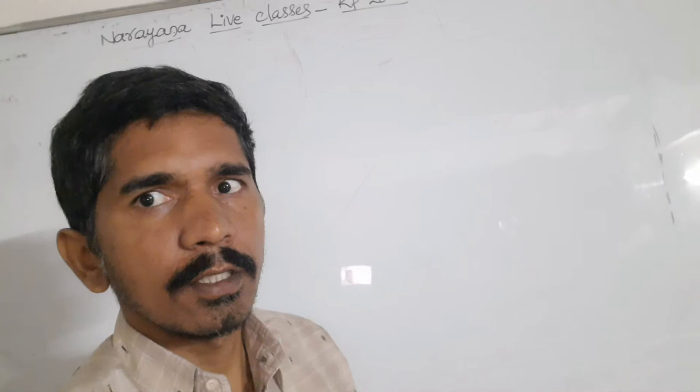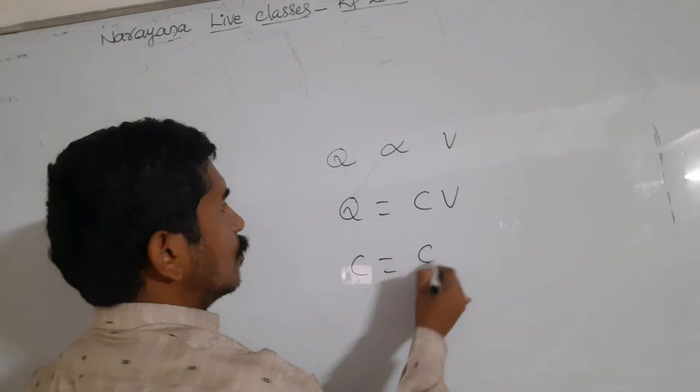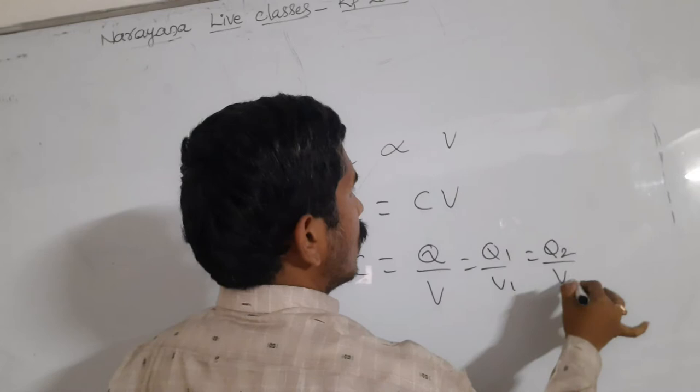Capacitors work on the principle of lowering the potential and storing the charge. The amount of charge Q is proportional to V, so Q is equal to CV. C is equal to Q by V, or Q1 by V1, or Q2 by V2.